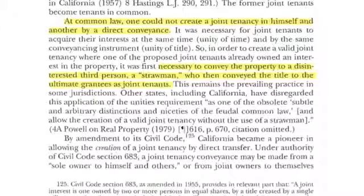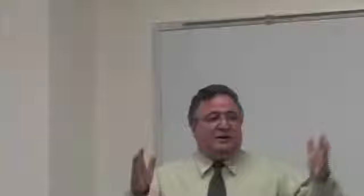California and about four or five other jurisdictions in the United States don't follow that anymore. They say it's useless. Unity of title means that it came from the same document — one document at the same time, not tomorrow or the day after, one grant to both of them at the same time.